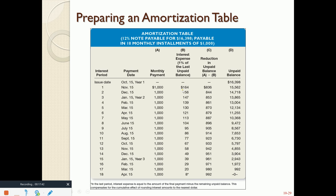If the entire payment is $1,000 and $164 of it is interest, the difference — $836 — reduces the principal. The new principal balance is $16,398 less $836, which is $15,562. Then $15,562 times 12% times one-twelfth gives us our next interest amount of $156. We keep going through the table until the unpaid balance is zero — that is an amortization table.